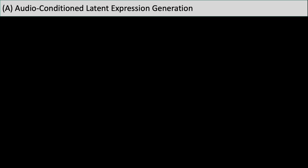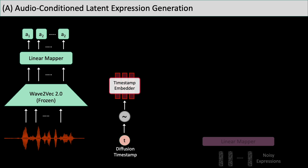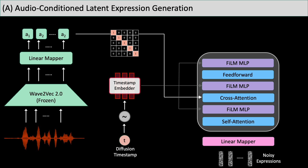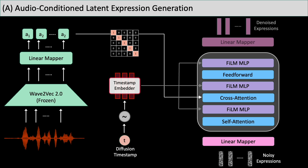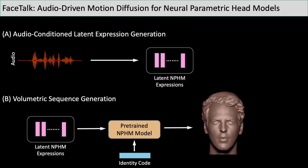To train our method, we fit neural parametric head models to audio-video recordings for supervision. The audio condition is encoded with Wave2Vec2. Noisy latent expressions are first projected via a linear mapper to the latent space of our transformer decoder. Audio features are infused into the decoder with cross-attention layers via alignment mask, and diffusion timestamp with FiLM layers. The generated expressions are then projected back to the original expression latent space. We then generate volumetric talking head sequences by leveraging the pretrained latent space of the neural parametric head model.